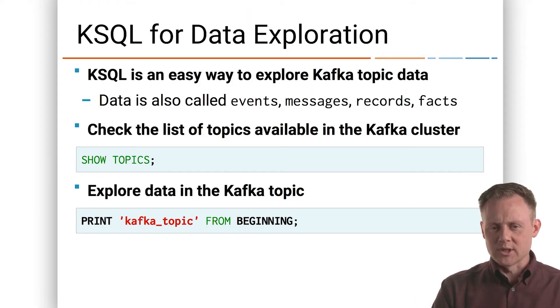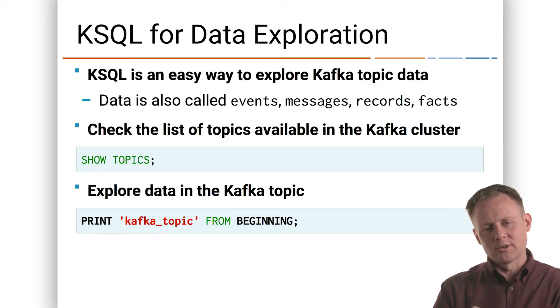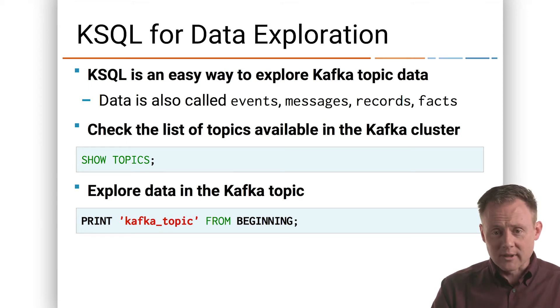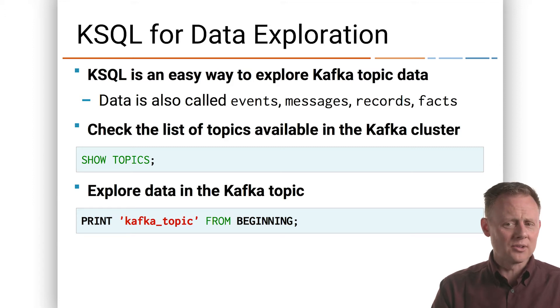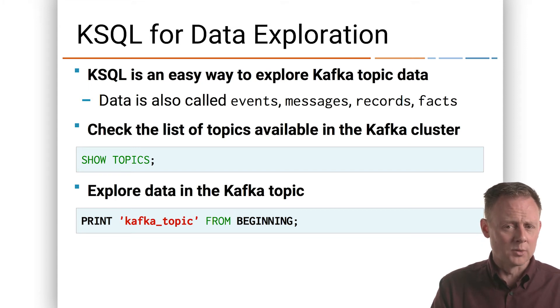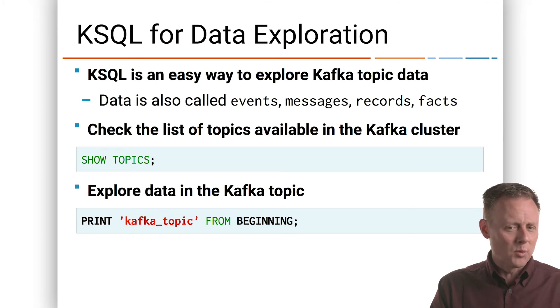First of all, simple data exploration. This is right now one of the bummers with stream processing. Relational databases are super mature — there are all kinds of great ways to explore data in a relational database. Not so much with streaming data, but with KSQL now, you have a command line tool where I can look at topics in my Kafka cluster with the show topics command, and I can very trivially print out the data in a topic, even if I haven't created a single stream. Once I've defined streams and tables, my data exploration powers only get better, but right from the word go with show topics and print, this is a breath of fresh air.